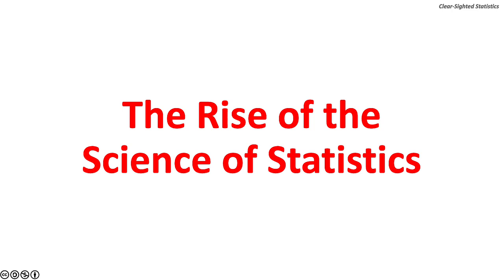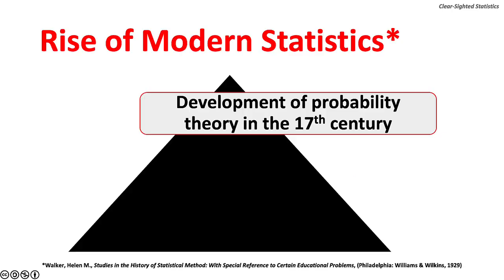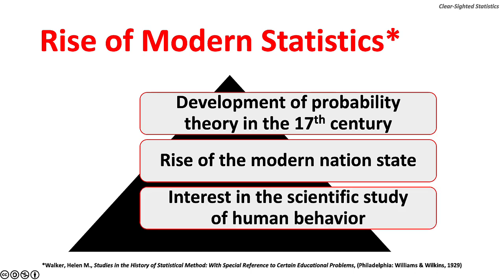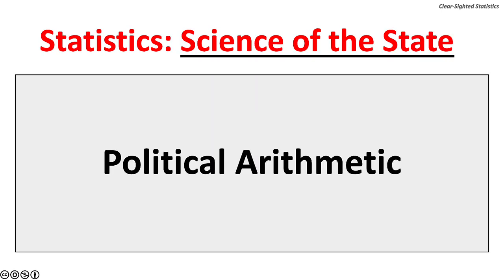Three factors led to the rise of statistics as a science: first, the development of probability theory in the 17th century; second, the rise of the modern nation state; and third, increased interest in the scientific study of human behavior. In the 18th century, statistics was sometimes called political arithmetic because governments needed to analyze quantitative data on economic, political, and social trends for the security of the nation state.